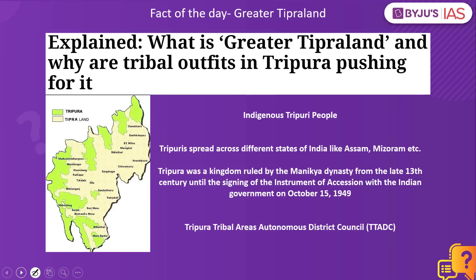The fact of the day is Greater Tipraland. States in India can be broken down into smaller states, turned into union territories, or parts can be given to other states — all decided by parliament. People voice their opinion due to cultural differences, language differences, or developmental issues, feeling that one region gets more resources at the cost of another. This is why people come out, voice their opinion, and want to create a separate state.